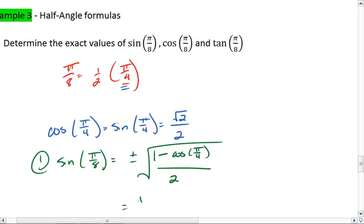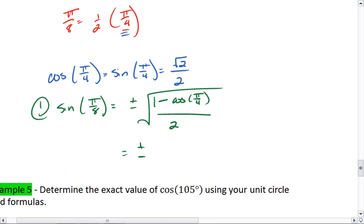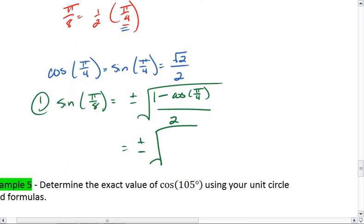We can plug in our values now. We get plus or minus the square root of 1 minus root 2 over 2, all over 2. Which equals the square root of 2 minus root 2, all over 4.